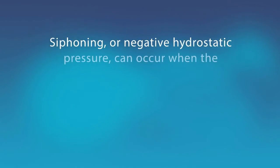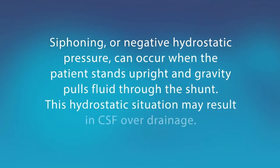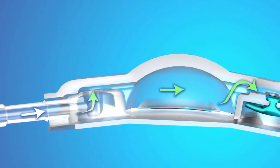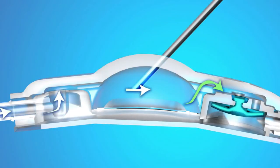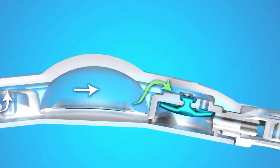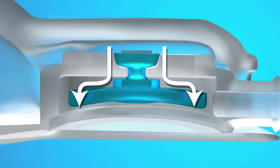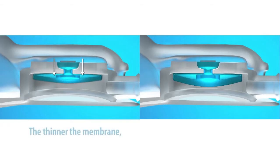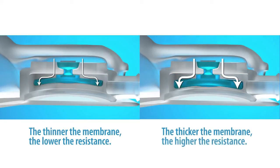Siphoning, or negative hydrostatic pressure, can occur when the patient stands upright and gravity pulls fluid through the shunt. This hydrostatic situation may result in CSF overdrainage. As CSF flows through the Delta Valve, it enters the inlet connector, flows by the proximal occluder, and into the central reservoir. For sampling CSF, the reservoir dome can be accessed using a 25-gauge or smaller non-coring needle. From the reservoir, CSF flows through the valve mechanism flow holes. Like the contoured valve, the Delta Valve also has a silicone membrane valve, or diaphragm, which opens or closes depending on the inlet intracranial pressure. By varying the thickness of the membrane, the amount of pressure needed to open the membrane valve can increase or decrease depending on the valve and pressure level chosen.